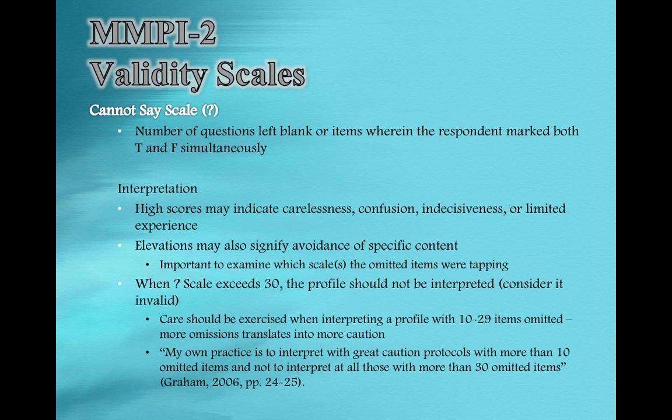One of the ways an instrument can become invalid is through what we call the Cannot Say scale. This refers to a significant number of items that the client was unable to indicate either true or false for. Individuals sometimes leave questions blank — maybe their eyes scanned incorrectly and they skipped an item, or they were ambivalent about how to respond and forgot to come back to it. If you have 30 or more items that are skipped or not answered, the MMPI is invalid at that point.